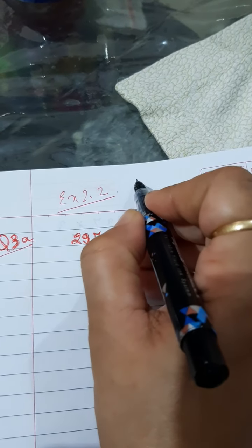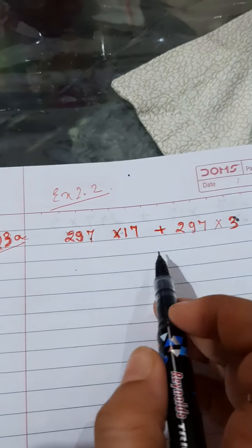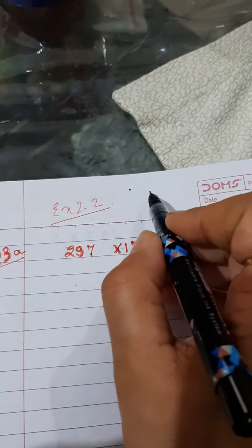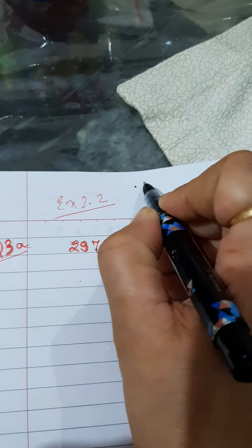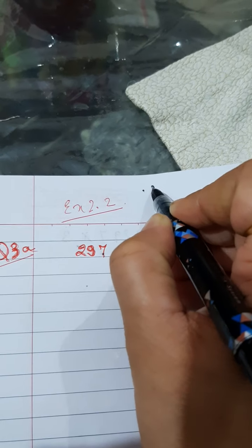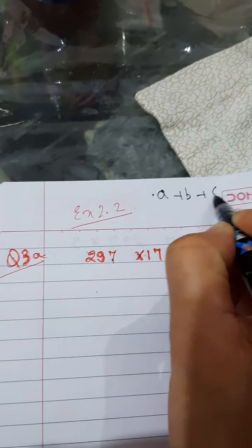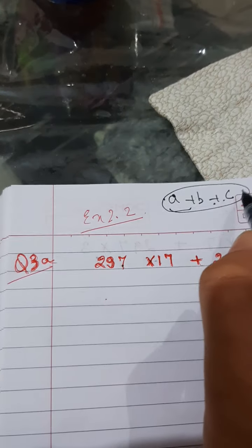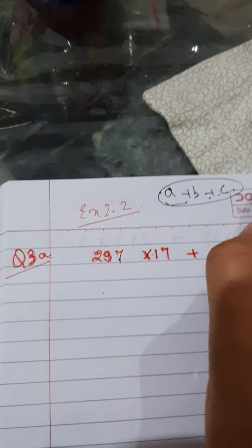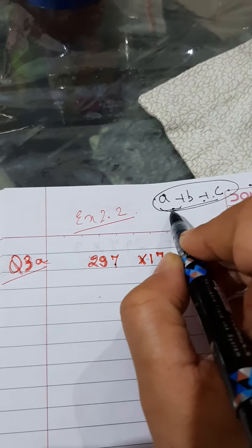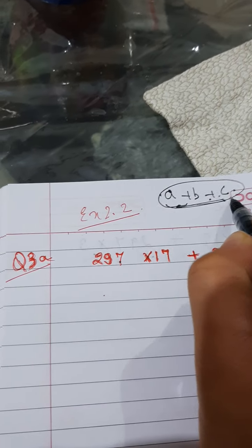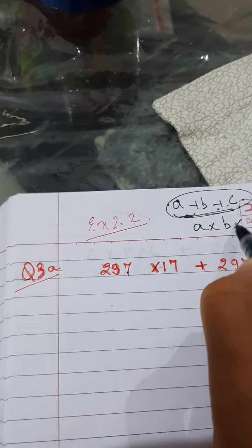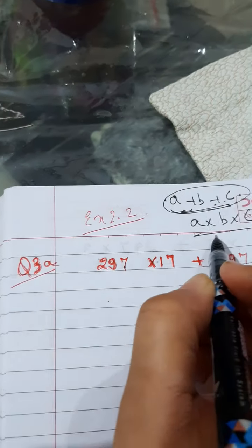Otherwise, in commutative property or associative property, it is based purely either on addition of three or more numbers or multiplication. In associative property, you add in any order, you get the same answer, or you multiply in any order, answer is same.